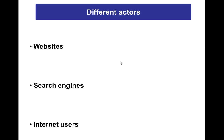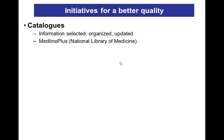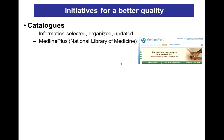To help users identify quality websites, some initiatives were taken in recent years, classifiable in three broad categories. Catalogues are websites generally created by medical libraries or public organizations, selecting the most relevant resources and organizing them in categories. The most well-known is MedlinePlus, created by the National Library of Medicine in the US, especially dedicated to the general public.